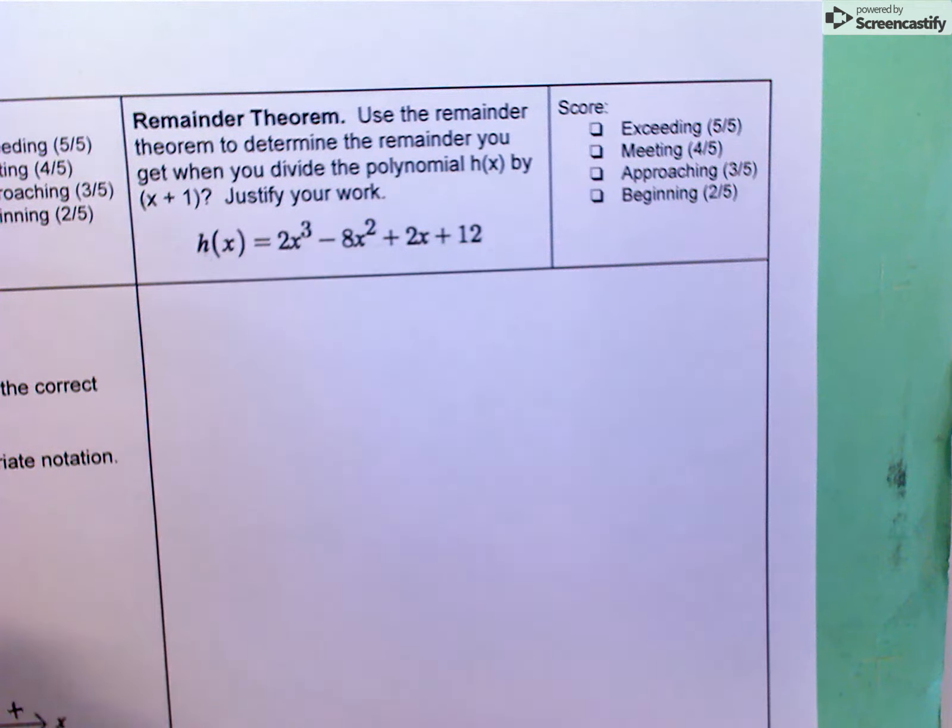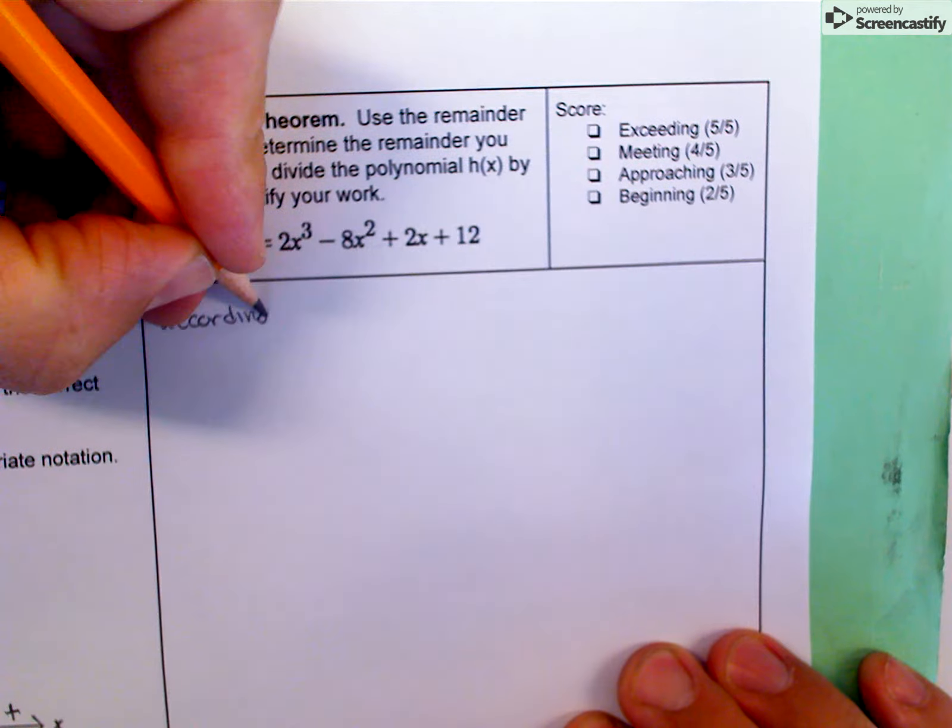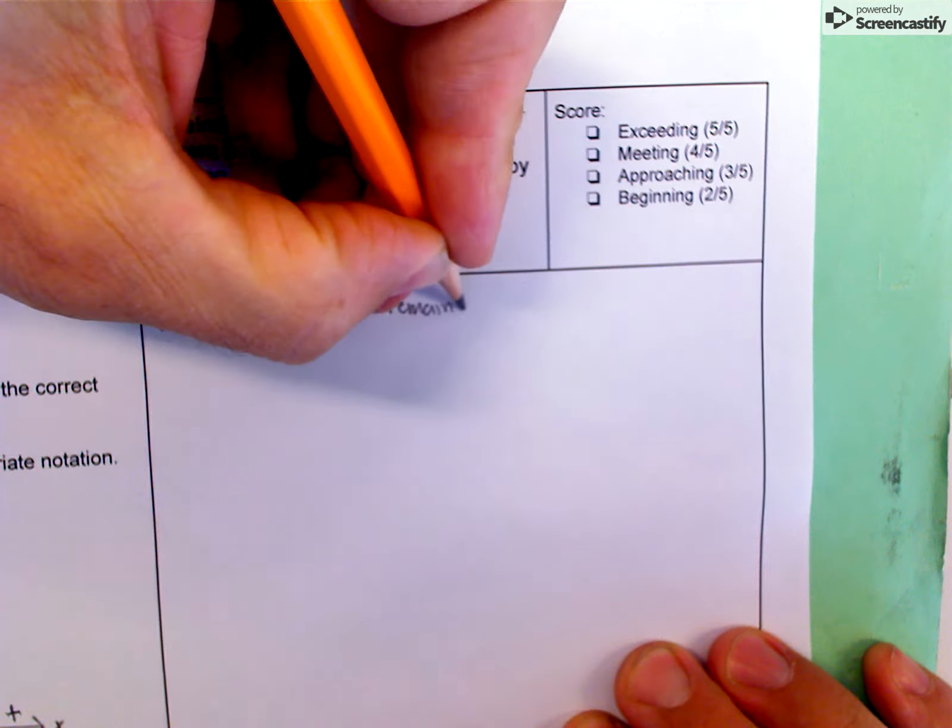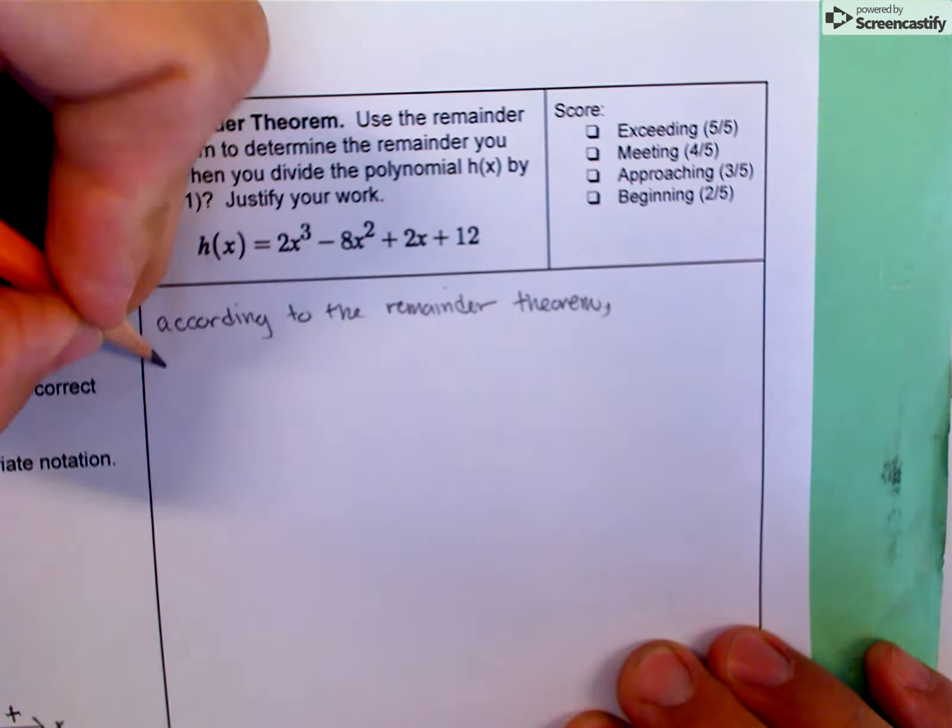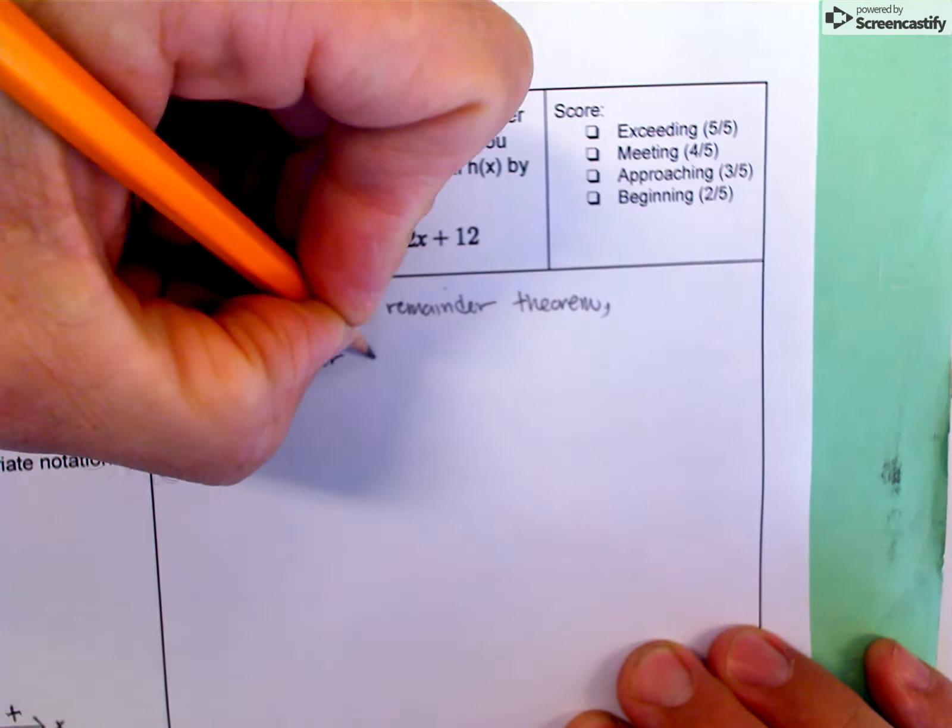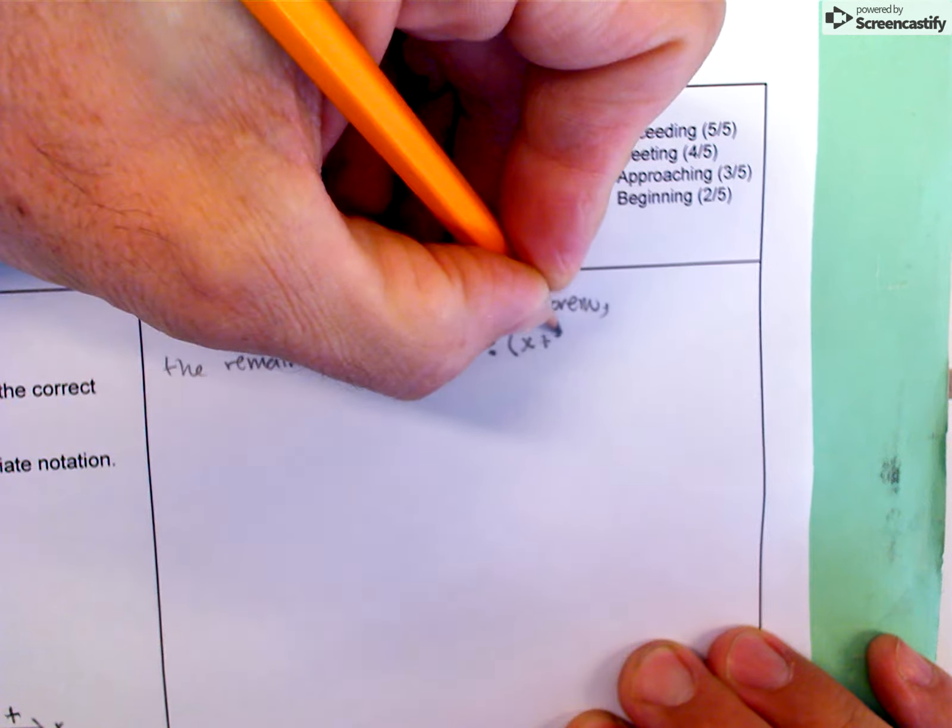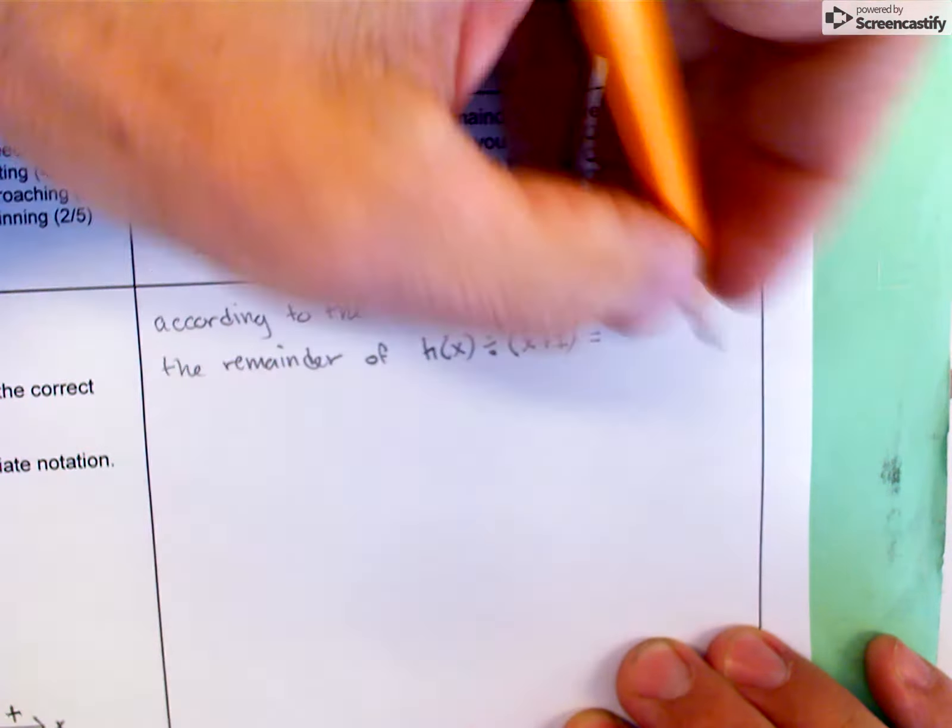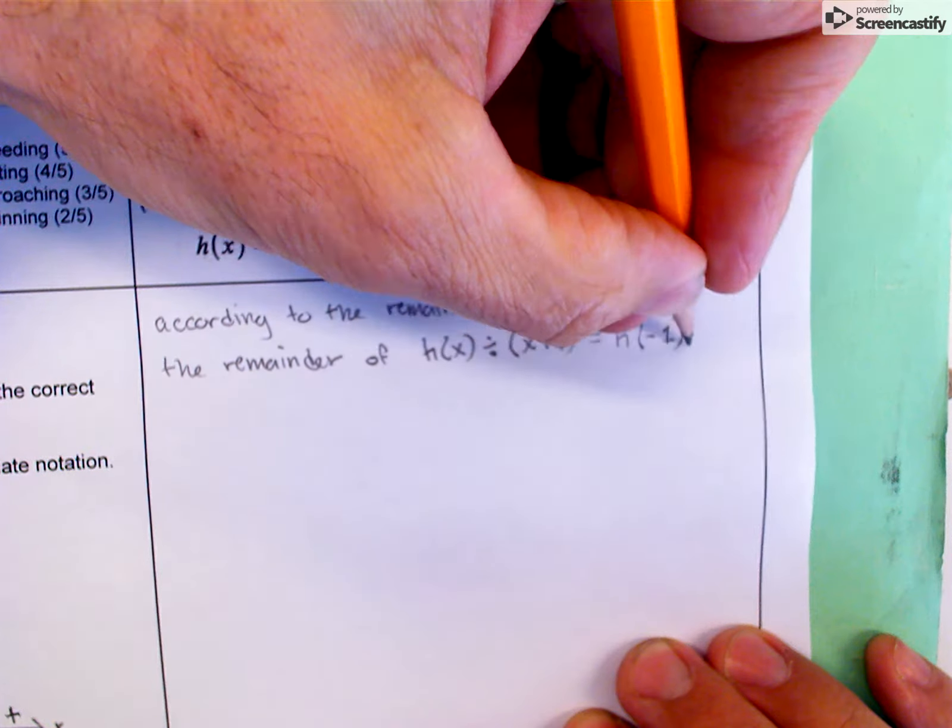Let me express that in writing. According to the remainder theorem, the remainder of h(x) divided by x plus 1 equals h of negative 1.